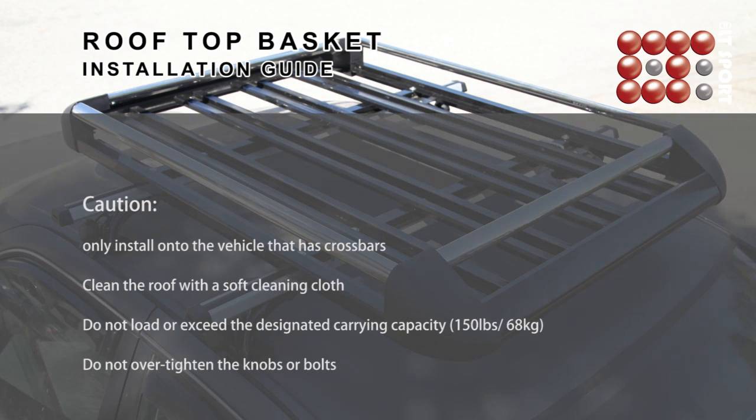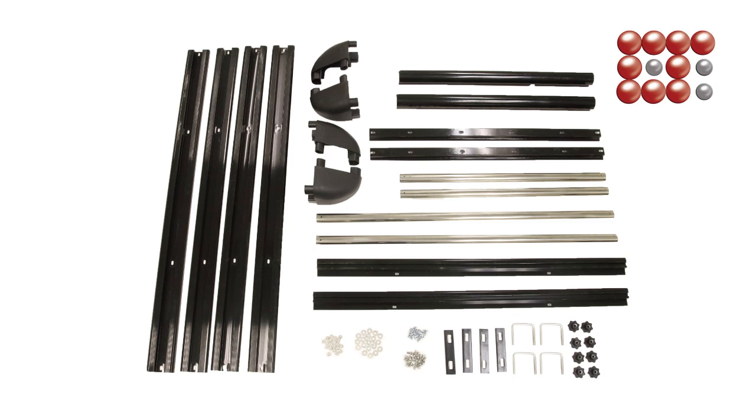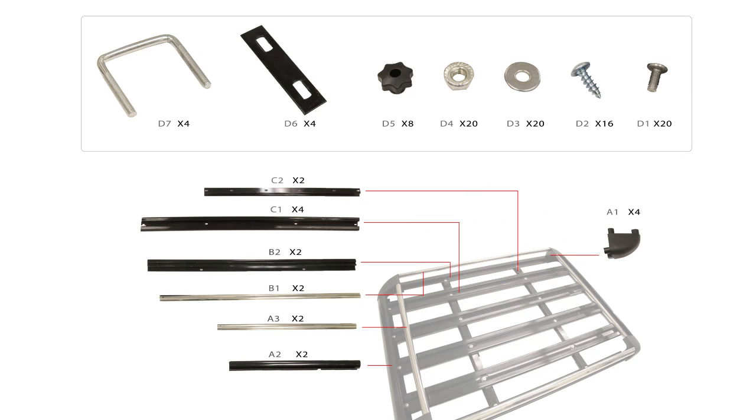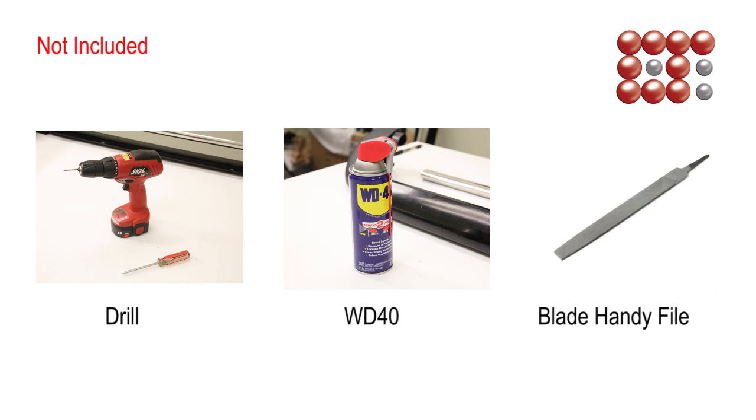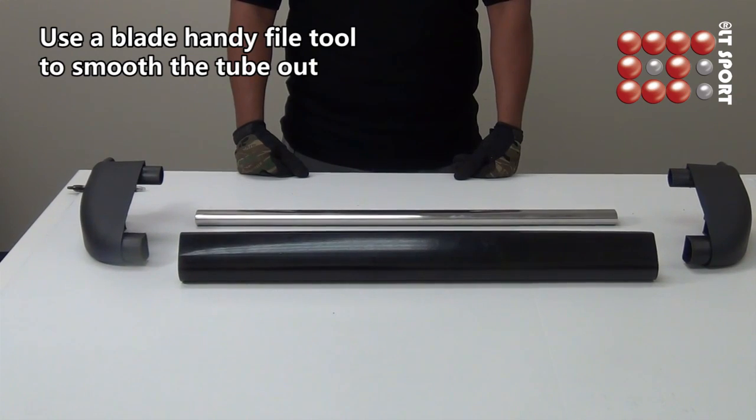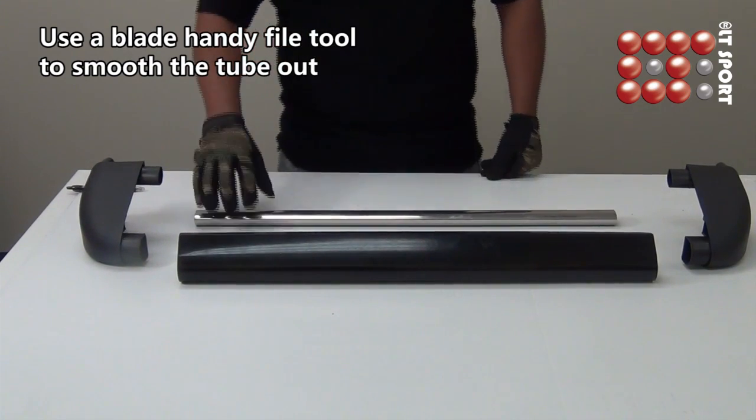Today we are going to show you the roof rack assembly. Please make sure you have all the parts that come with the box. First we are going to assemble the first part. Before the assembly, give a brief inspection on all the parts.